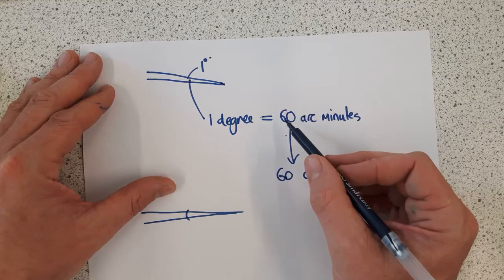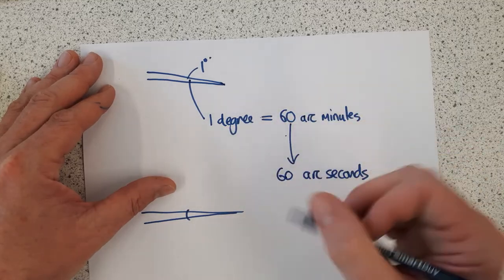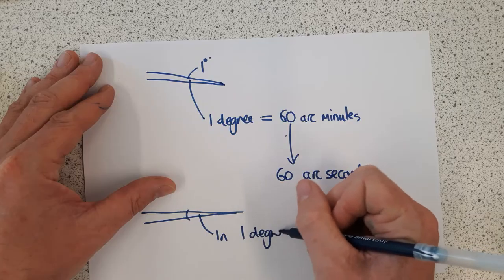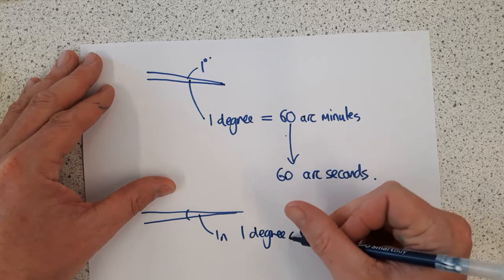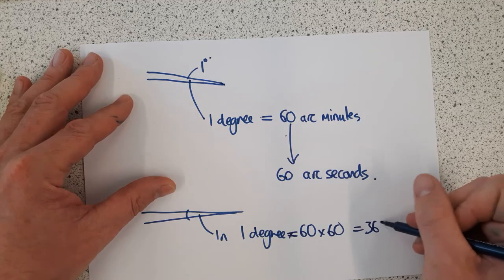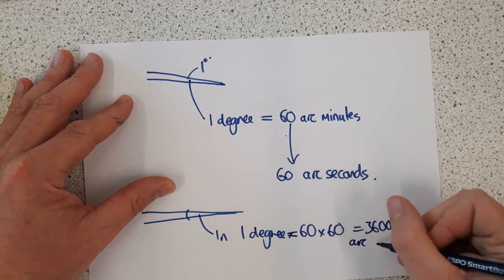There are 60 times 60 arc seconds in one degree. In one degree, we have equals 60 times 60 equals 3600 arc seconds.